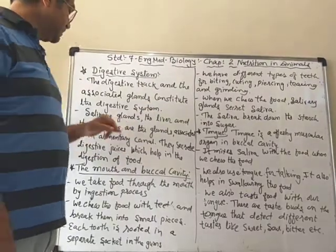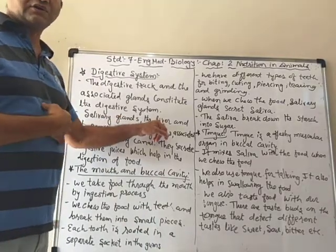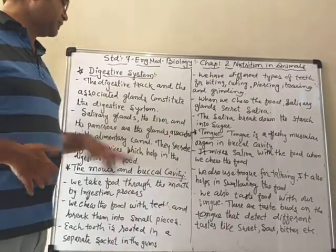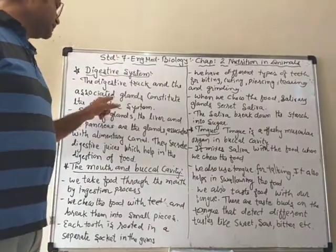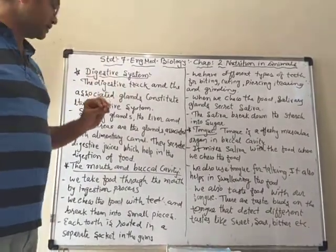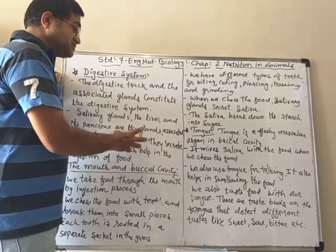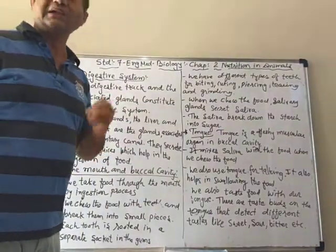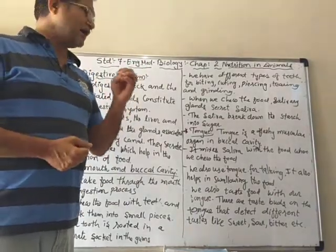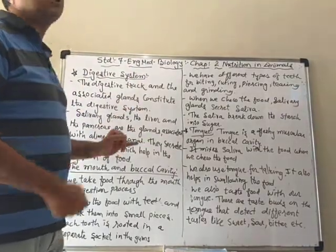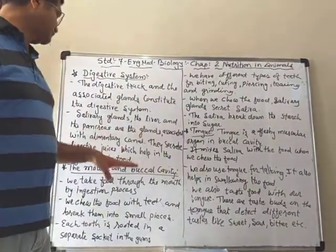Which are the associated glands? They are the salivary glands which are inside our mouth, the liver somewhere in the cavity of the abdomen, and the pancreas — which is also connected with our digestive tract, that is the alimentary canal. The food does not pass through these glands, but they help by secreting digestive juices which assist in the digestion of food.